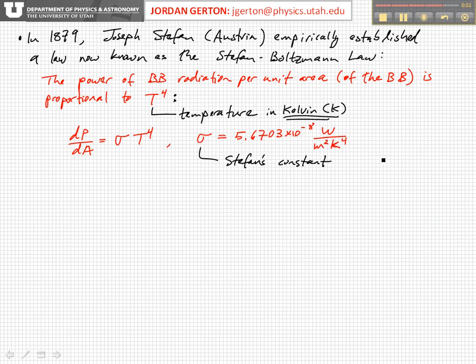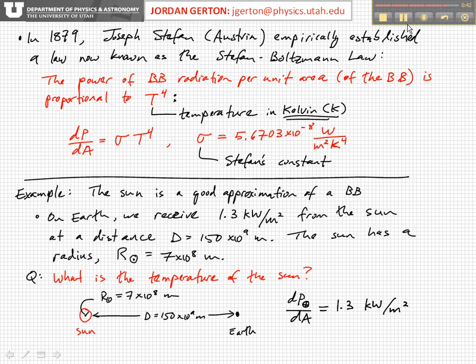Before we go on, let's consider an example — the sun's thermal emission. On Earth, we receive about 1.3 kilowatts per meter squared of solar radiation, so that's power per unit area. The Earth is about 150 times 10 to the ninth meters from the sun, and the radius of the sun is about 7 times 10 to the eighth meters. From this information, we want to use the Stefan-Boltzmann law to determine the temperature of the sun.